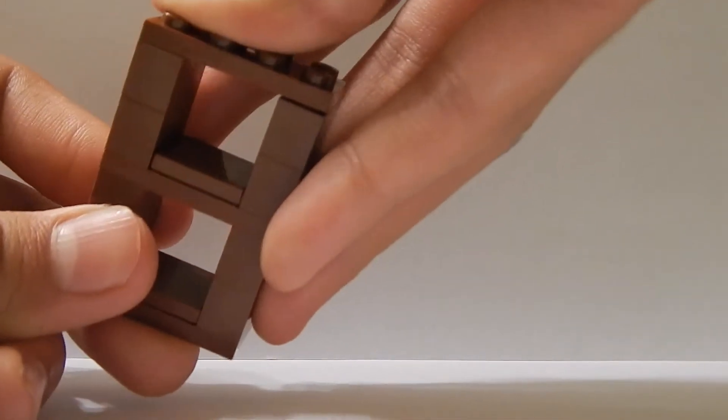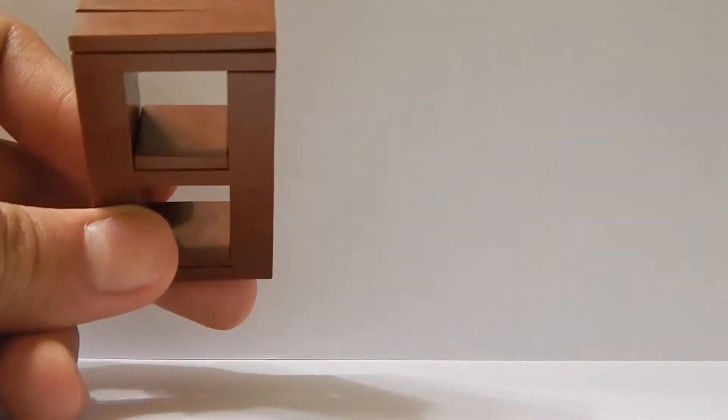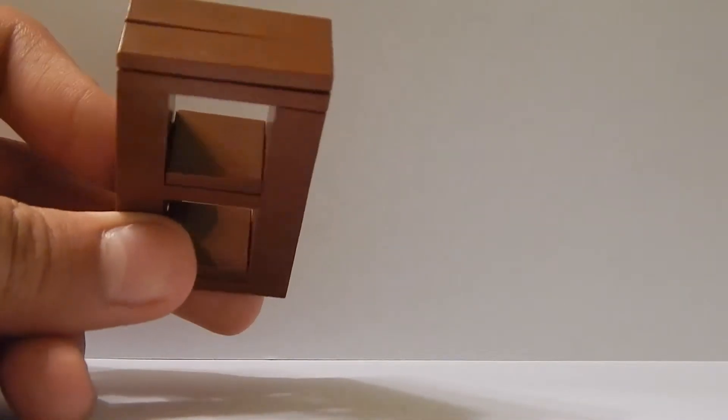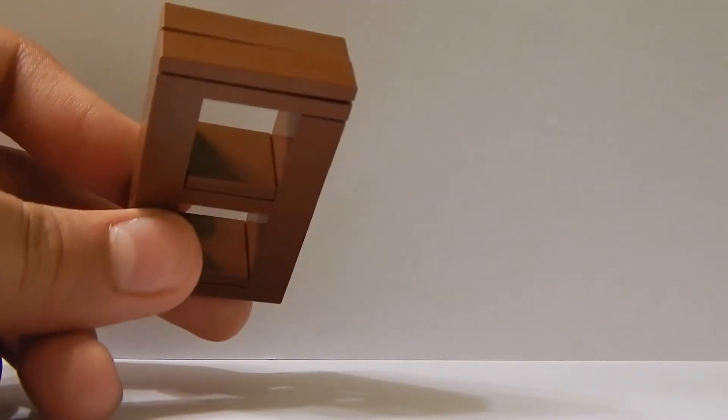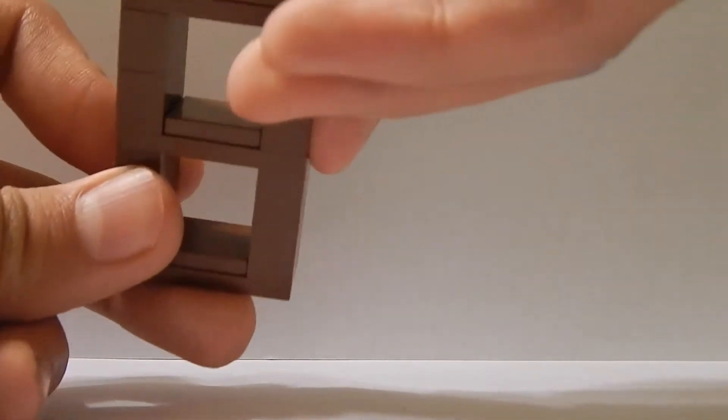On top you place another 2x4 plate and you get two 1x4 tiles and place them on top. You can also use a 2x4 tile. You can improvise. You don't even have to tile the top off if you want to. It's not necessary, but just to give your bookcase a nice smooth look on the top you can do that.